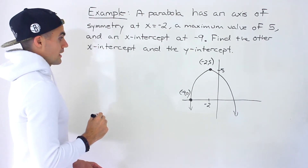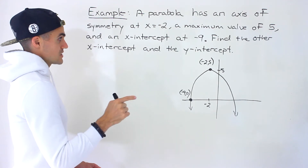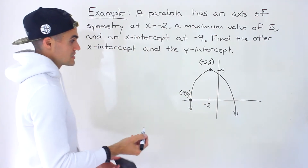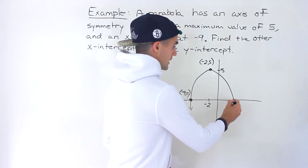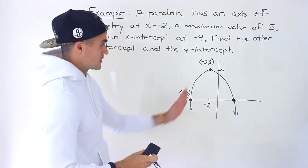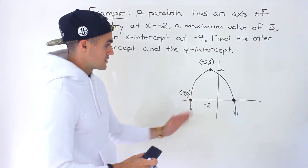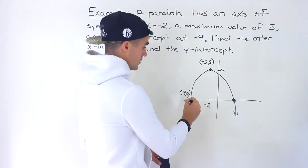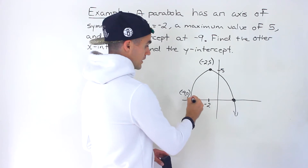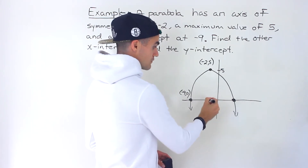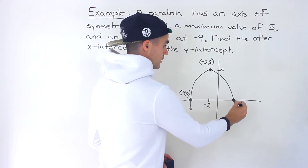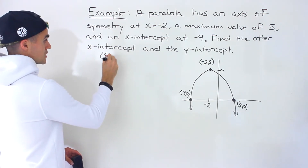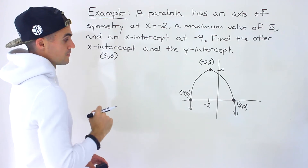We have to find the other x-intercept and also the y-intercept. Notice that the other x-intercept we can get right away because we know the axis of symmetry and we know that it cuts the parabola in half — it's in the middle of the two x-intercepts. The distance from negative 9 to negative 2 is 7 units. So if we add another 7 units, negative 2 plus 7 gives us positive 5. So the other x-intercept is at 5 and 0.